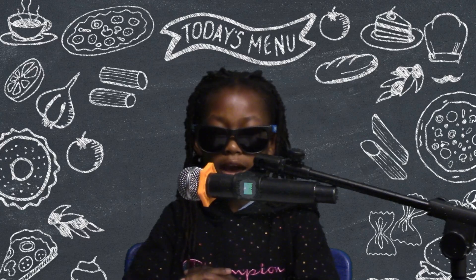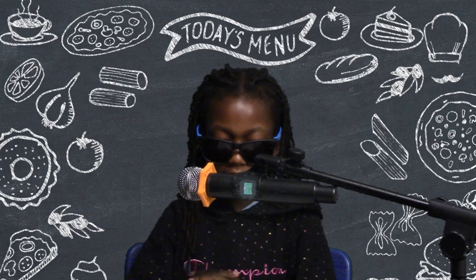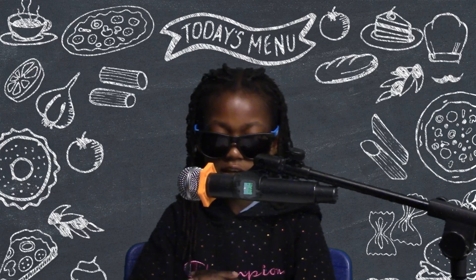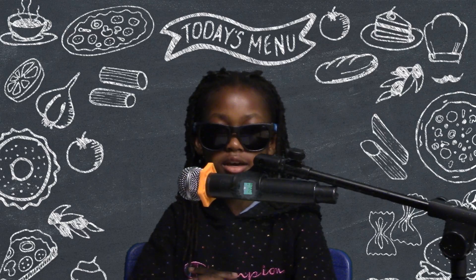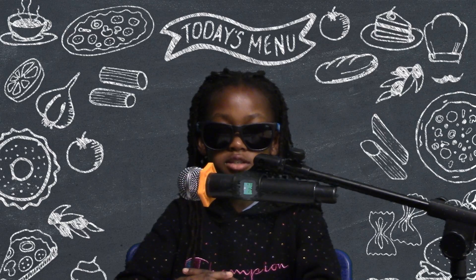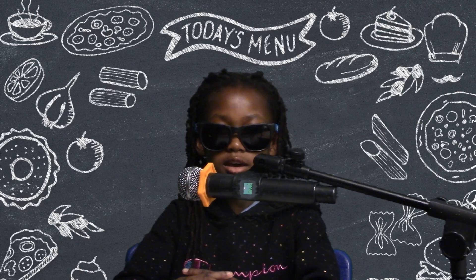Good morning, I'm Jersey with today's lunch. Today's lunch is chicken and waffles. If you don't want that, you can get a PB protein kit. Make sure to get your fresh fruit, veggies, and milk. Now back to Greta and Brooklyn with today's highlights. Have a wonderful day.